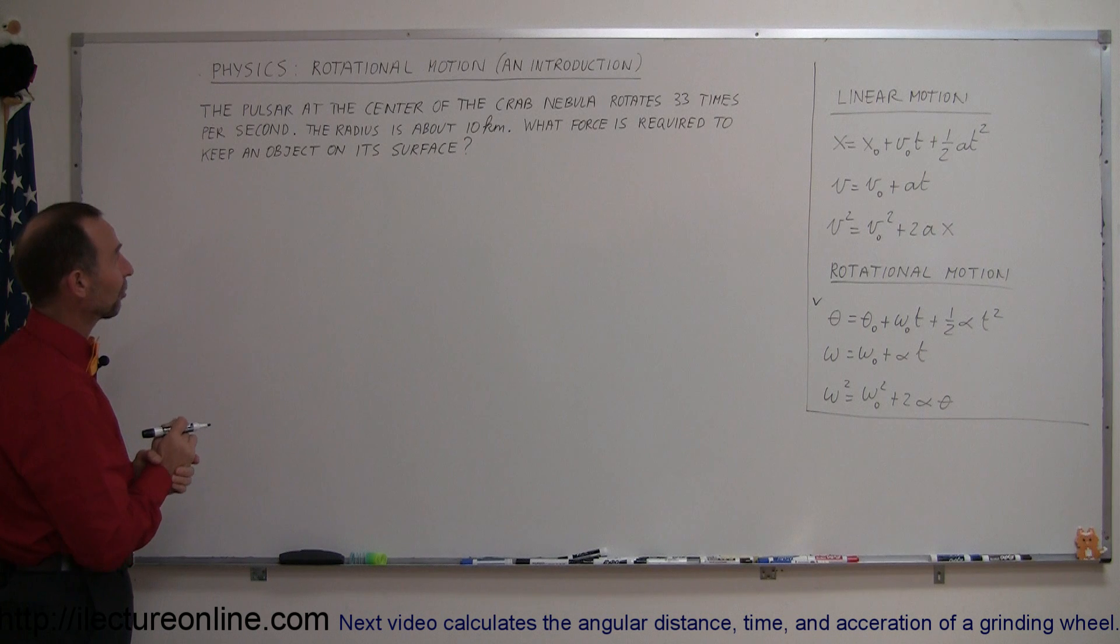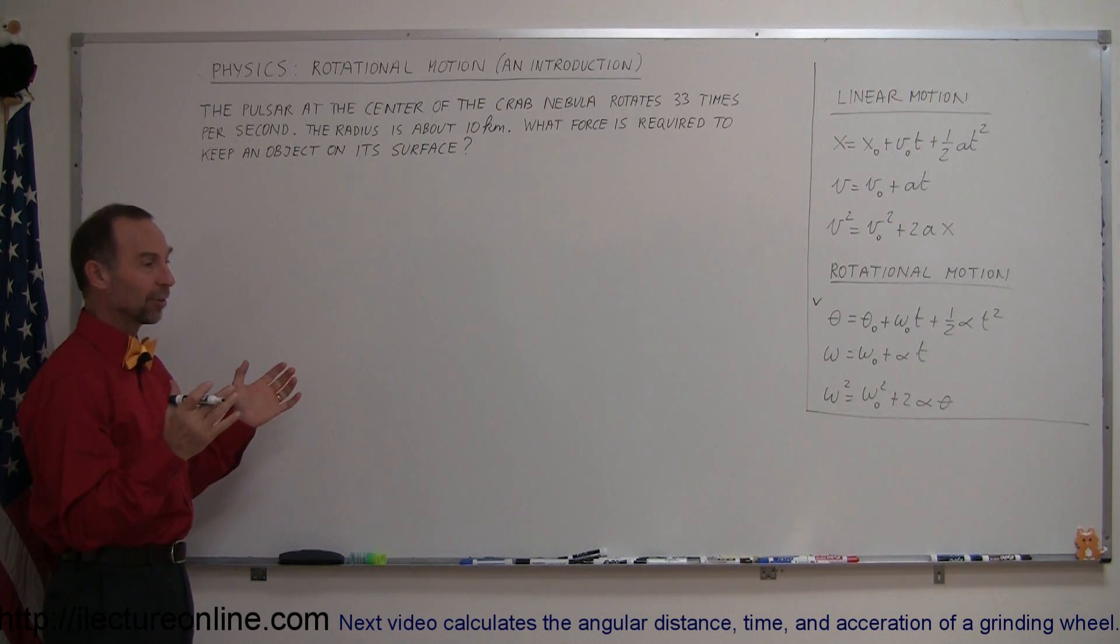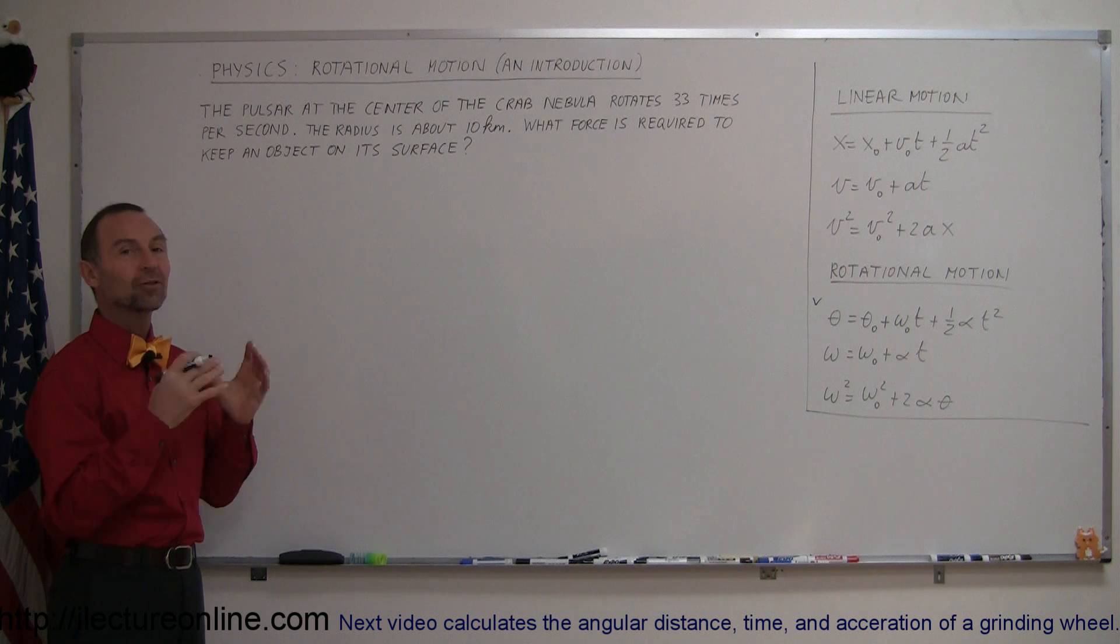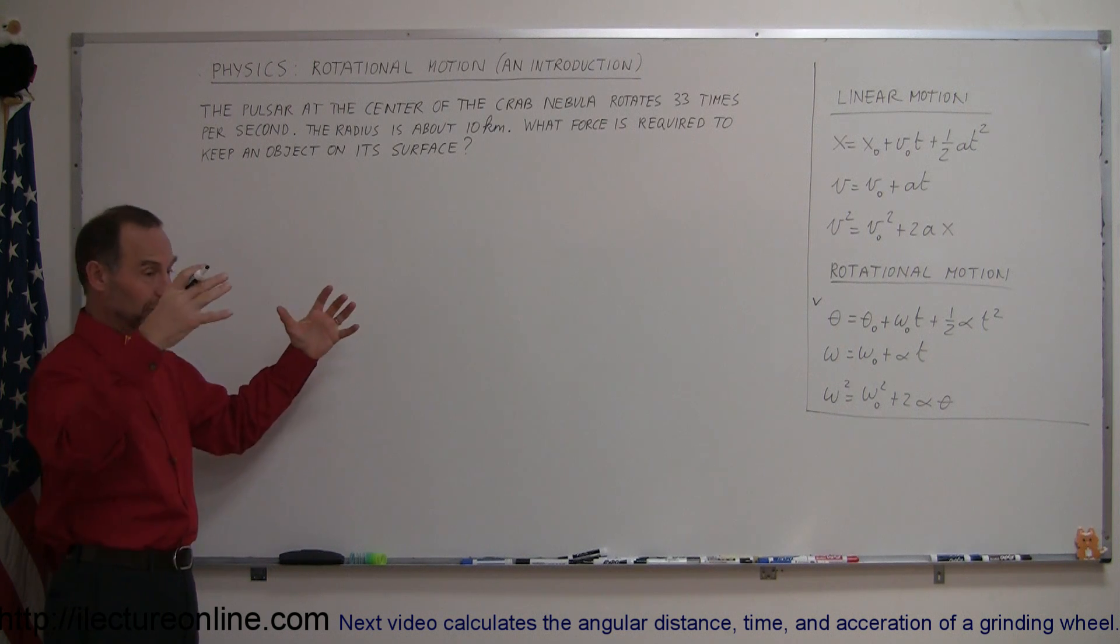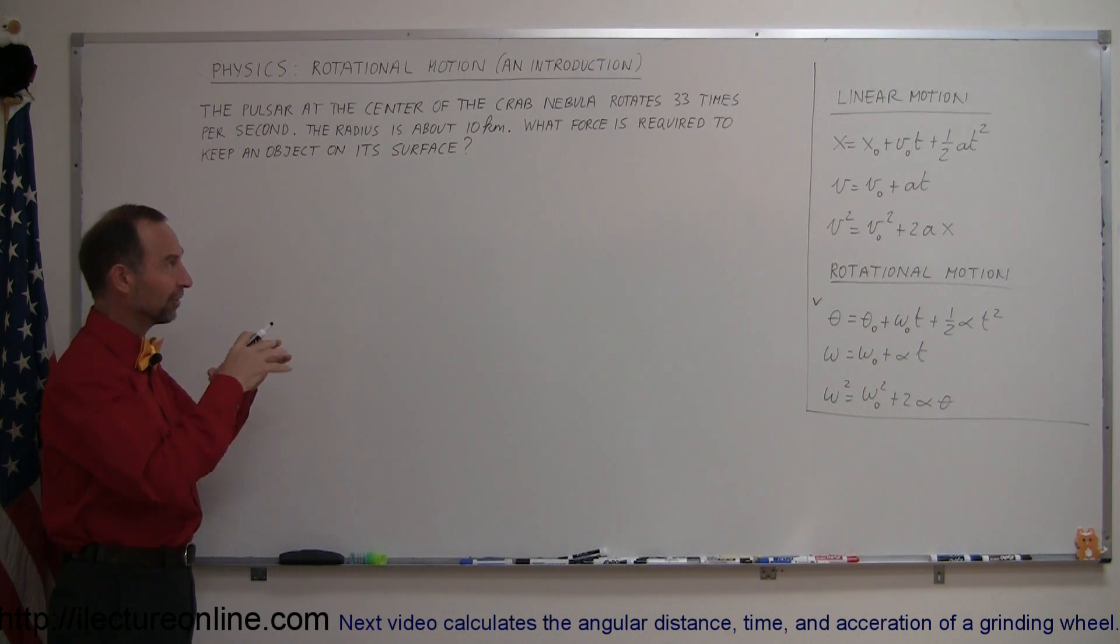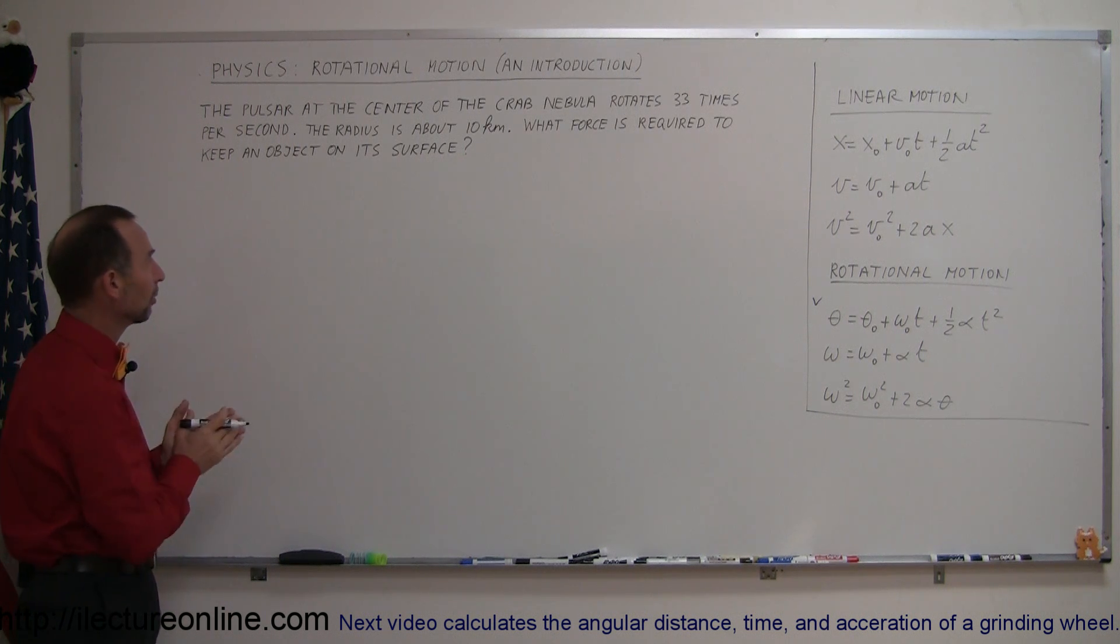The pulsar at the center of the Crab Nebula, and you may say what's a pulsar? Well, a pulsar is the remnant of a dying star that has gone through a supernova and typically through very strong gravitational forces they collapse into a very small, dense, very very dense remnant which we call a pulsar.